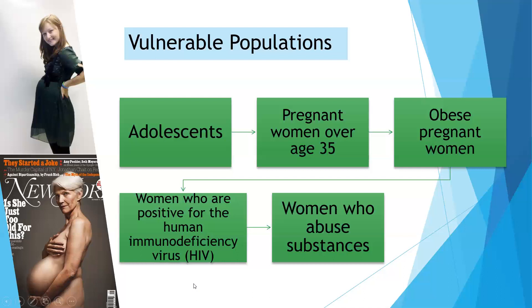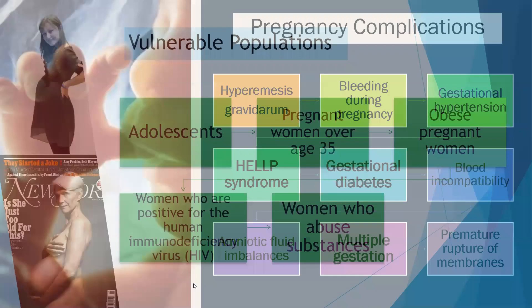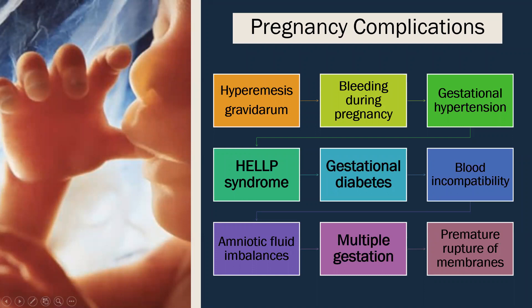The pregnancy complications we'll be covering include hyperemesis gravidarum, bleeding during both early and late pregnancy, gestational diabetes, blood incompatibility, amniotic fluid imbalances, multiple gestation, and premature rupture of membranes. Gestational hypertension will be saved for another lecture.